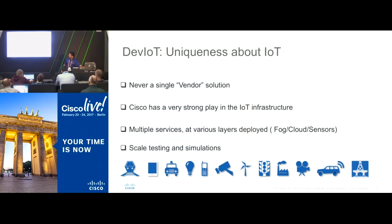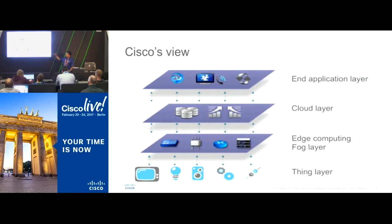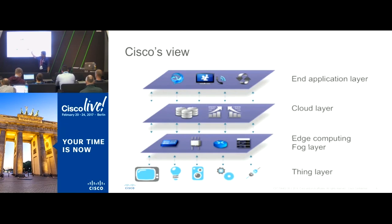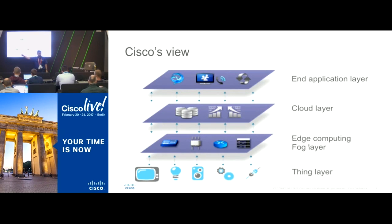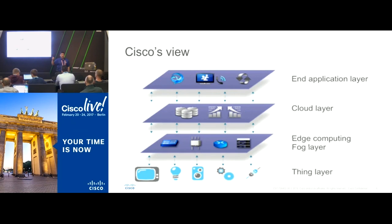This is Cisco's view of what IoT looks like. At the bottom layer you have the things — the sensors. Then the edge devices where most of the fog networking is: the ISRs, IR829s, 4000s, IE4000s. Then comes the cloud layer where most of the data is going. And finally you have the end application where you build out a solution.